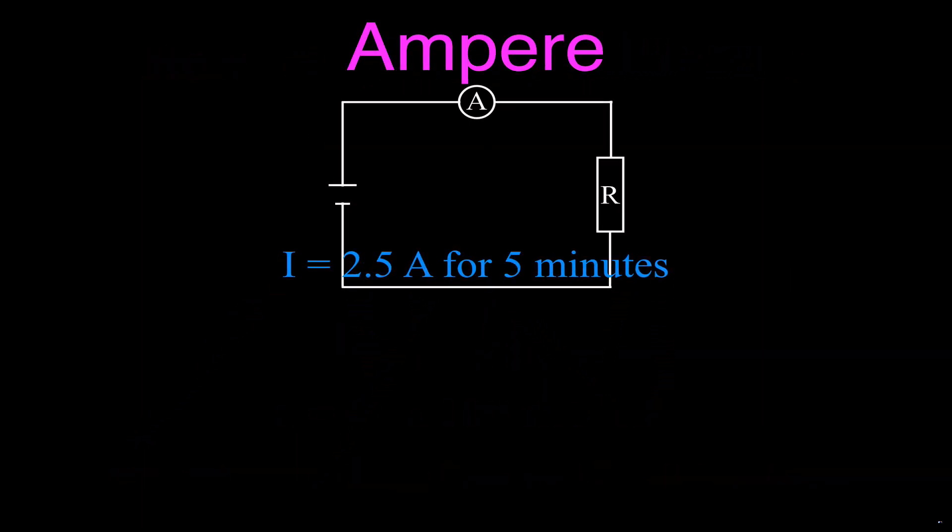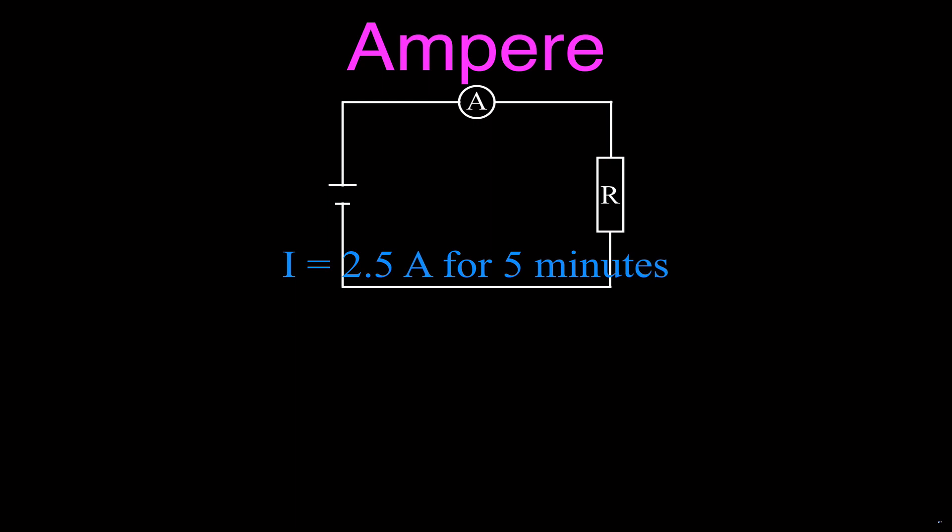Now we just have a little short problem here for amperes and current. We can say we have this circuit, we have a battery, we have an ammeter, current meter measuring the current, and we have a resistor. We can say the current in that circuit is 2.5 amperes. I'm going to let the current run or let the circuit run for five minutes.